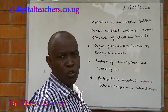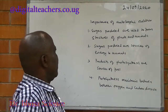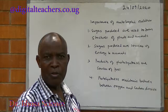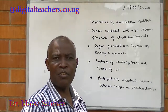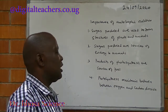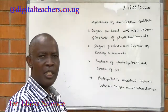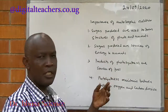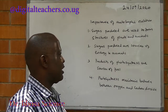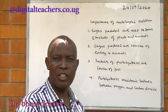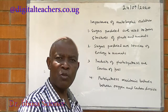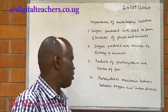The importance of autotrophic nutrition: First, sugars produced are used to form structures of animals and plants. Second, sugars produced in autotrophic nutrition are a source of energy to animals. Third, products of photosynthesis are sources of fuel, for example firewood and petroleum products.